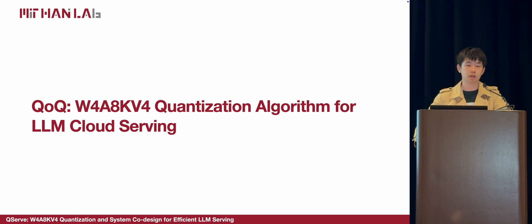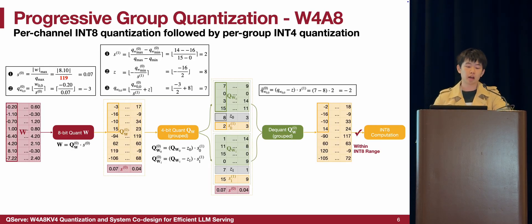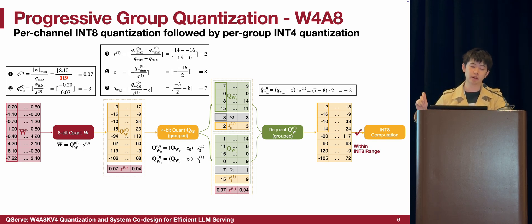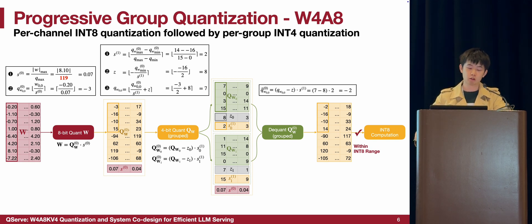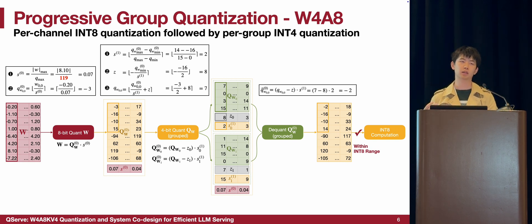Now let's talk about the algorithm design: the QoQ W4A8KV4 quantization algorithm for large language model cloud serving. A key part of our QoQ algorithm is progressive group quantization for W4A8 GEMM computation. Instead of directly mapping FP16 weights to 4-bit aggressively, we first quantize the FP16 weights to 8-bit per element with per-channel quantization, and then convert the intermediate W8 to W4 with group quantization. Crucially, before the GEMM computation, these 4-bit weights are dequantized back to 8-bit so they can be multiplied with 8-bit activations using the INT8 tensor core.